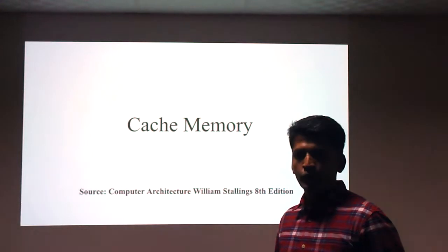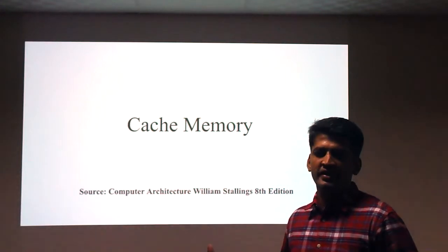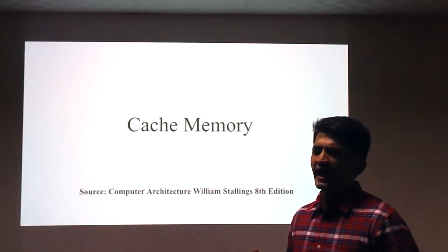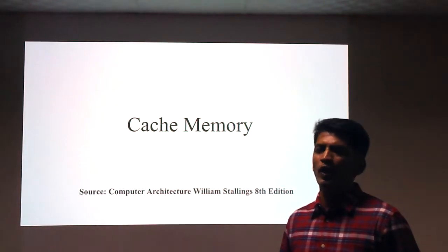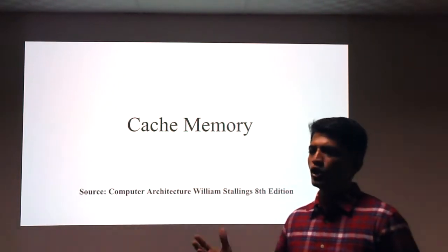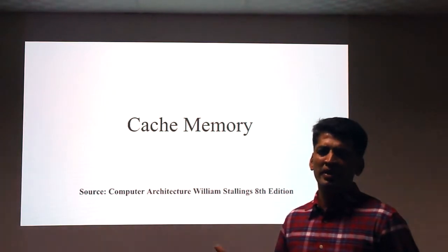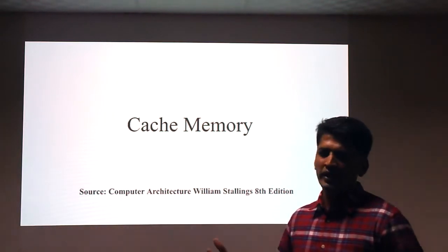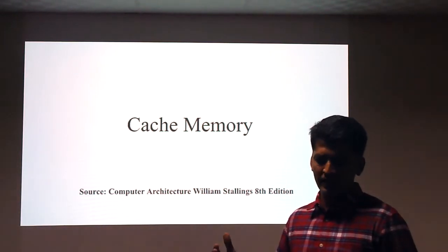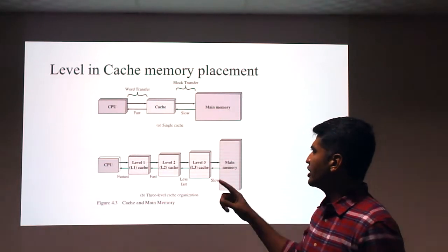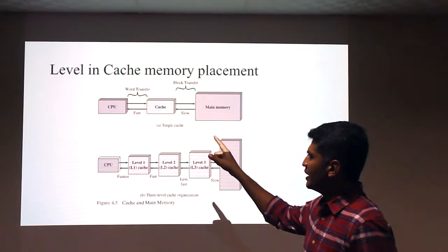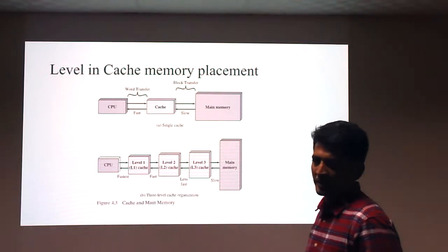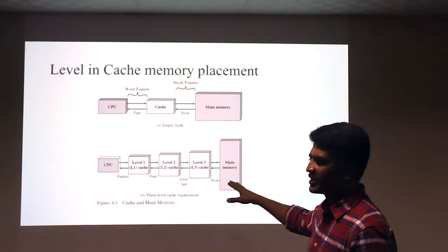In this video we'll discuss cache memory. Cache memory is a smaller, volatile memory — if the power goes off, the data may be lost. Cache memory is placed between the CPU and the main memory.